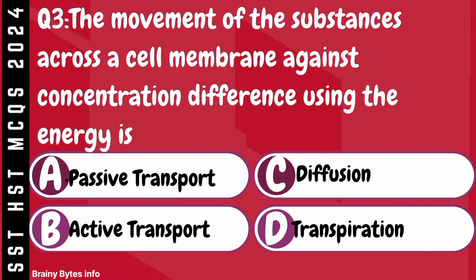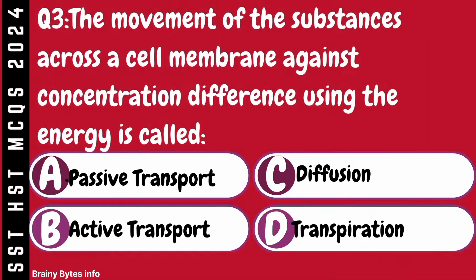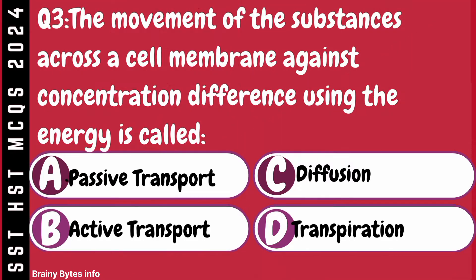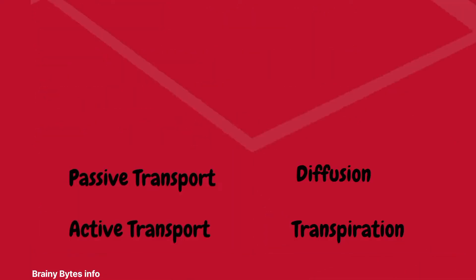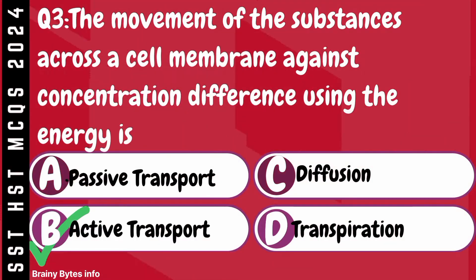Question 3. The movement of substances across a cell membrane against concentration difference using energy is called. A. Passive transport. B. Active transport. C. Diffusion. D. Transpiration.